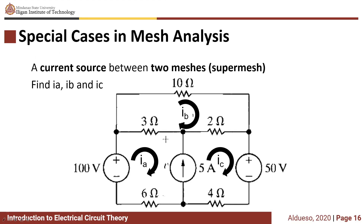The next special case is when a current source is between two meshes. We treat the two meshes as one mesh, and it is called a supermesh. In this figure, there is a current source between mesh IA and mesh IC.